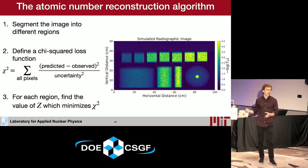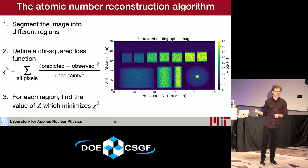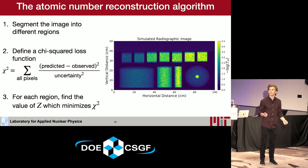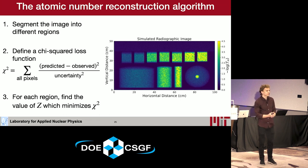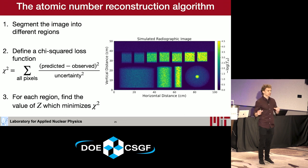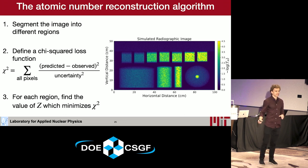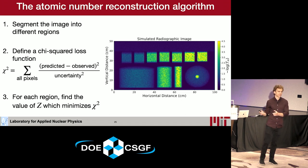Here's what this looks like. On the right, you can see a plot of the simulation output — the different objects in the image are clearly visible, and noise has been added to make it representative of realistic images. The atomic number reconstruction algorithm works as follows: run an image segmentation routine to identify different regions in the container, then for each region define a chi-squared objective function quantifying how well the model matches the simulated transparency measurements, then minimize chi-squared to find the atomic number that best fits that region.